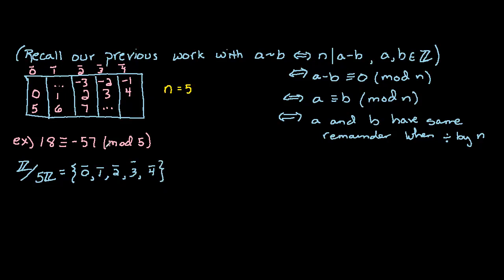As we said before, the names for the equivalence classes are not unique. I could relabel these as 5, 6, 7, 8, and 9 if I so desired. Here's another example: we could look at Z mod 3Z, and that would be the set of equivalence classes 0, 1, and 2.